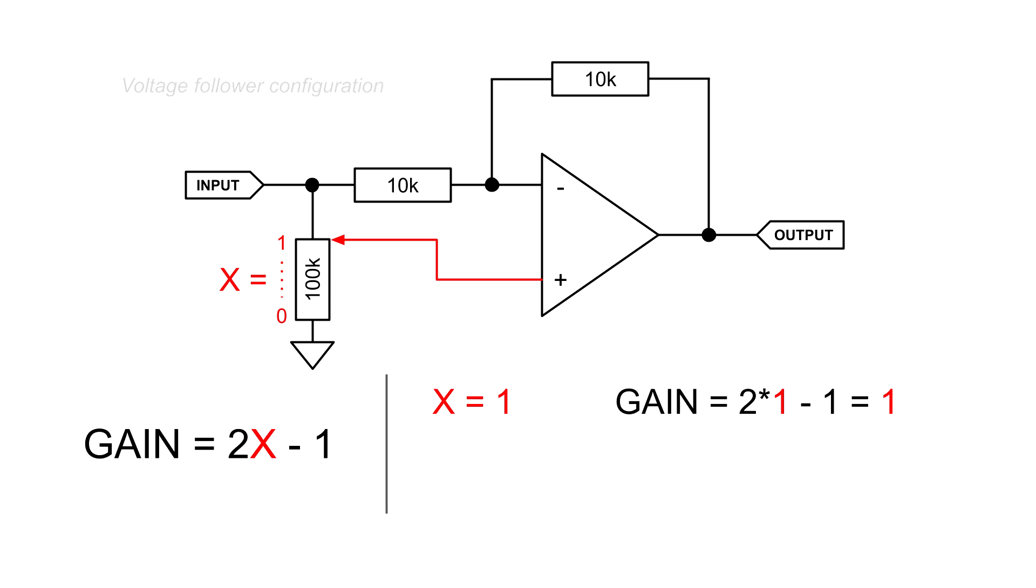With the wiper all the way to the input signal, x equals 1. This leads to a gain of 1, or in other words, this circuit now functions as a voltage follower.